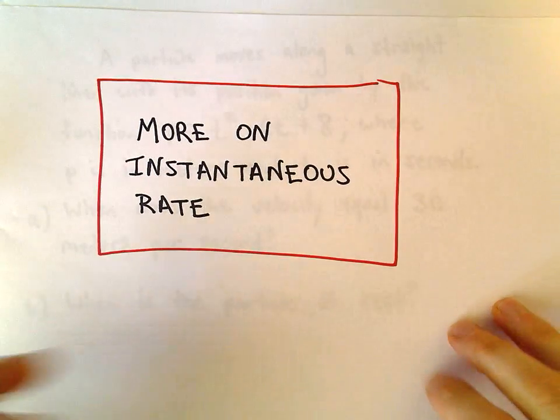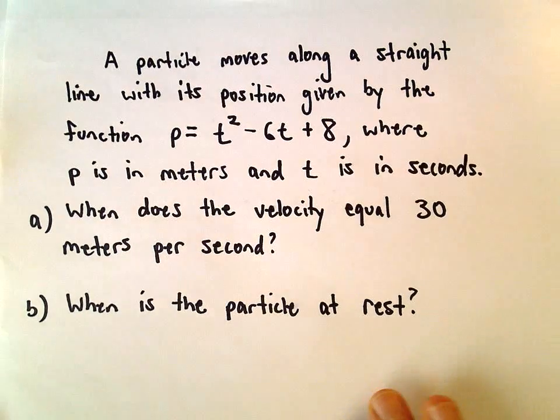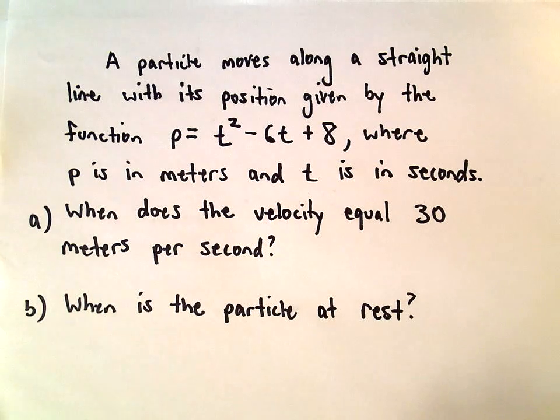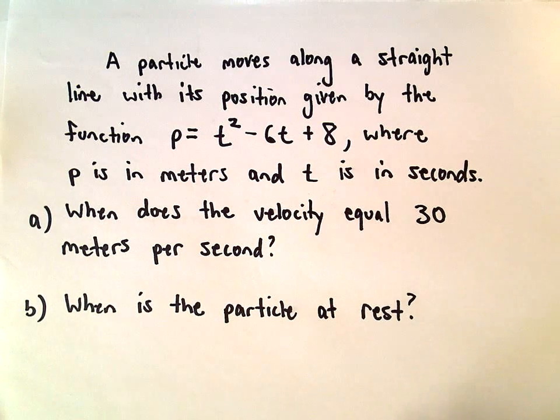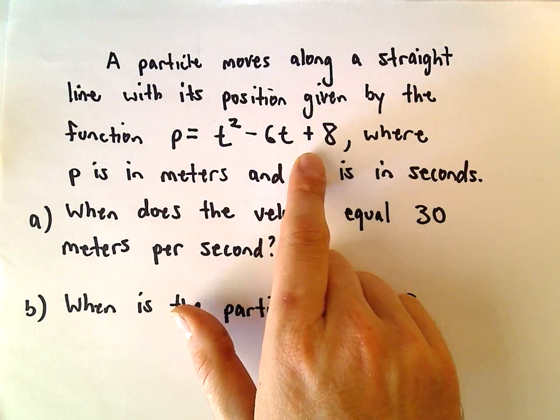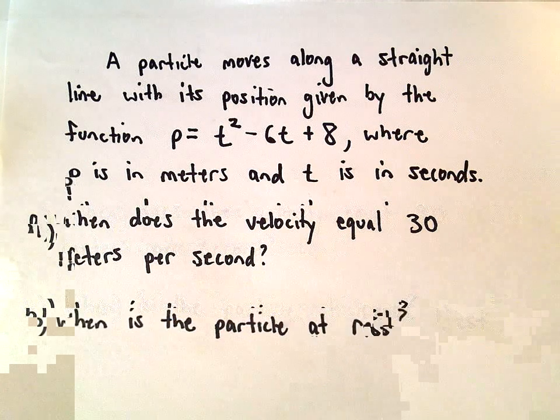Okay, so one more example here on instantaneous rate. We've got a particle that moves along a straight line, and its position is given by the function p equals t squared minus 6t plus 8, where p is in meters and t is in seconds.